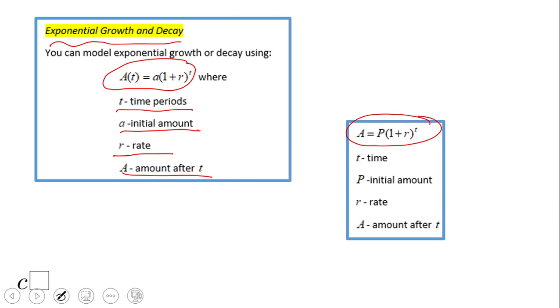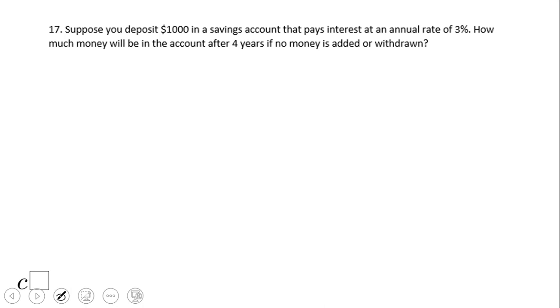This formula is also related to money, right? T is the time, like I said, usually years. P is the initial amount, the principal, r is the rate, and A is the amount after t. So let's see here some problems.